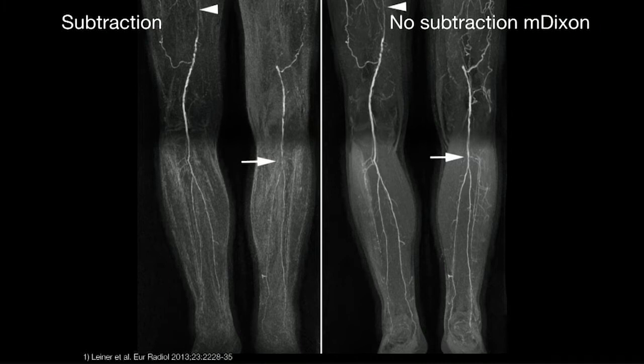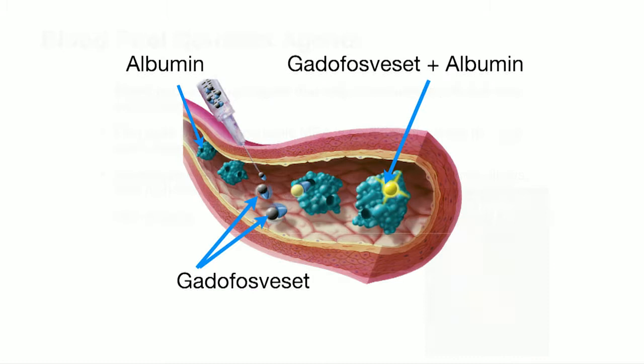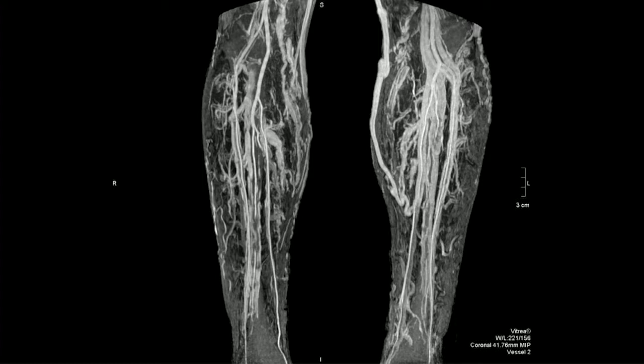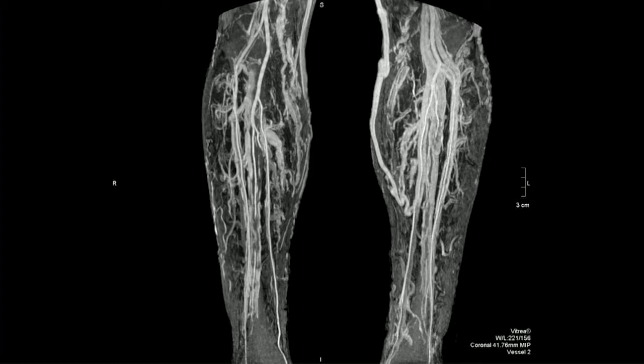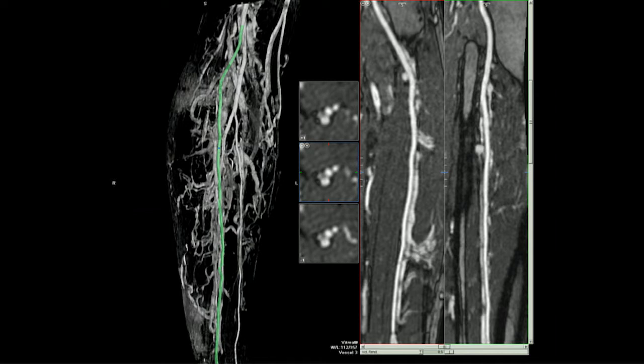What about blood pool contrast agents that just stay in the blood pool indefinitely? The advantage is very high spatial resolution because we're not worried about acquisition time, and we also get information about the veins which surgeons really like. Gadafosveset was the first commercially available agent — now off the market — but it bound to albumin with very high specific relaxivity when bound, giving beautiful images. Using vessel tracking software you can pull the arteries out from the veins and do curved planar reformats.